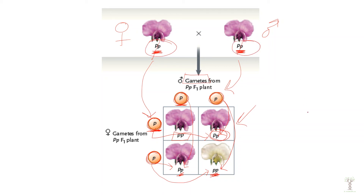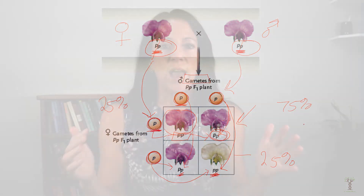If the recessive allele from mom and the recessive allele from dad combine, we have a white homozygous recessive baby pea plant. If we have heterozygous parents, what is the probability they will have purple babies? 75% chance of having purple offspring. What's the probability they will have white offspring? 25% chance. The probability of being homozygous dominant is 25%, and 50% chance of being heterozygous. That's how we follow the alleles from the parents to the offspring.